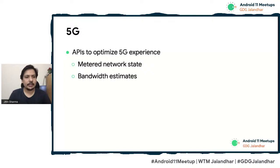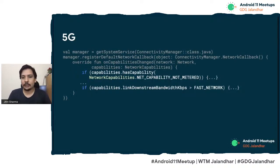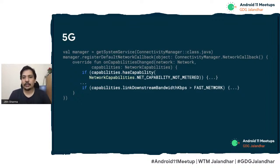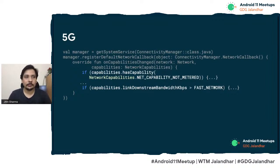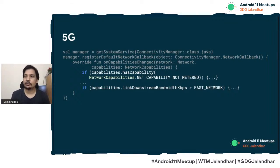Android 11 now has API support for 5G. This is added in ConnectivityManager — you can check for the capability NET_CAPABILITY_NOT_METERED and find out what kind of 5G network the phone is running on. You can check downstream bandwidth and determine whether it qualifies as a fast network, allowing you to change how you make network calls compared to 3G or 4G. 5G is not present in India at a cellular level right now, but phones supporting it are available, so keep this in mind.